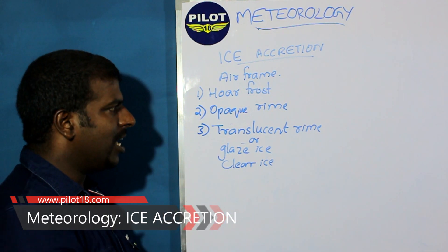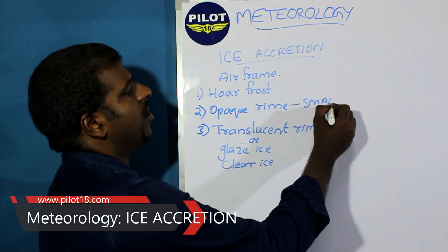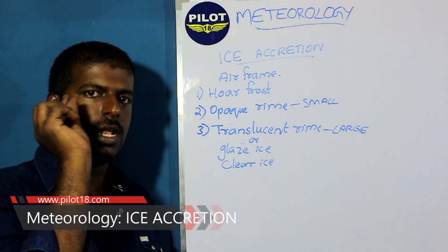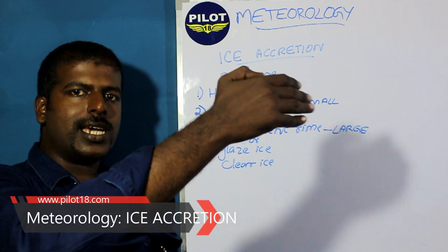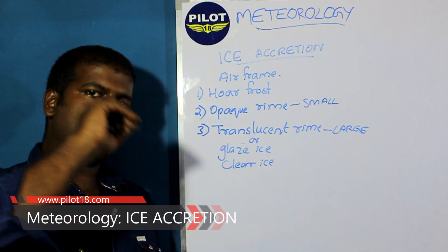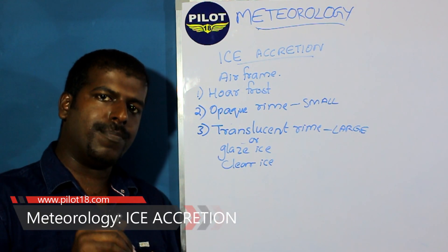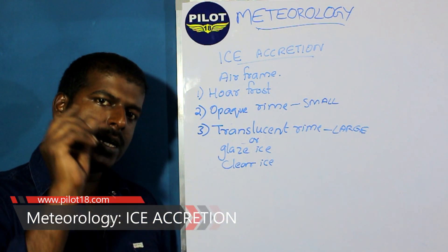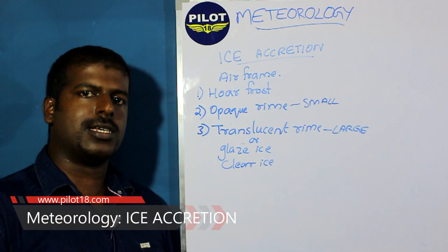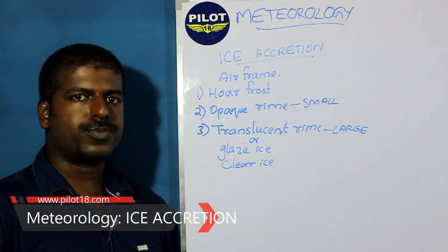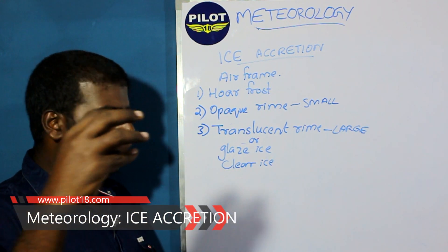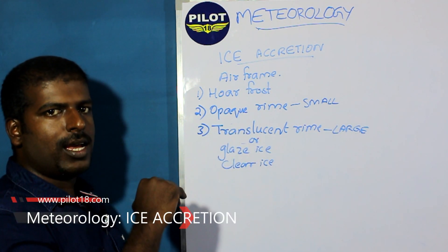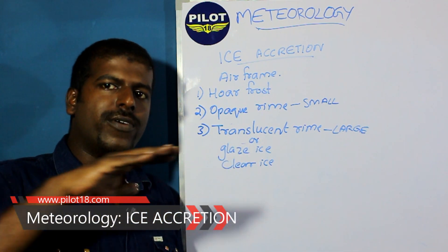How does clear ice occur? When large, super-cold water drops — not droplets, but water drops — hit the aircraft frame, they will hit and spread across the surface, forming a clear coating of ice. This can happen on propeller blades and even in the fuselage structure. The large drops hit the airframe, spread backwards, and form a clear sheet of ice all over the surface.